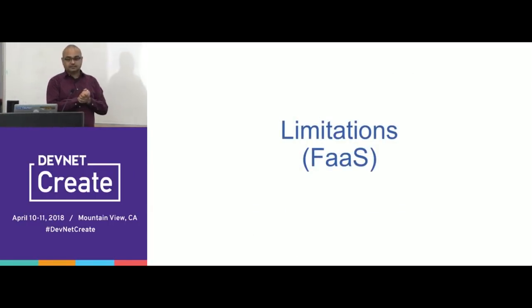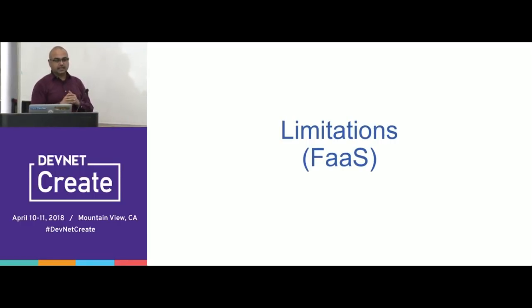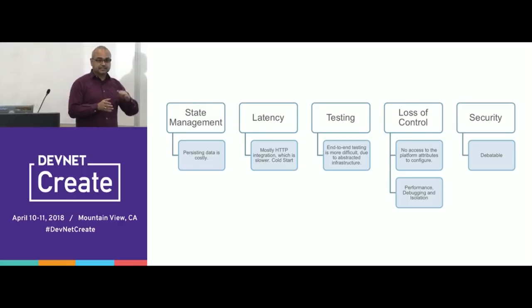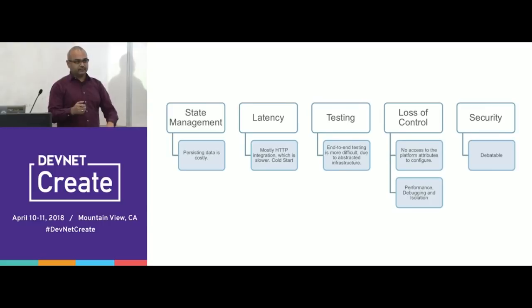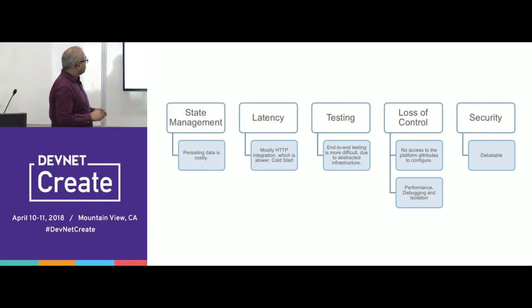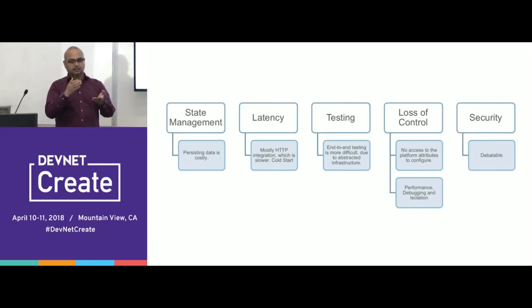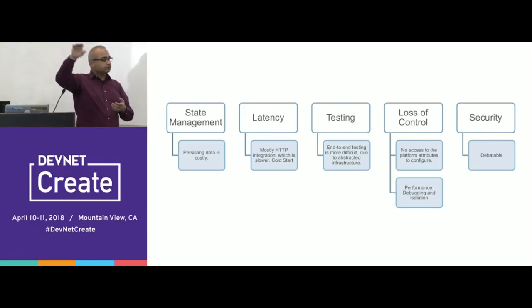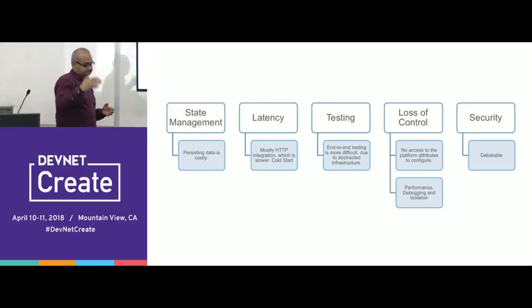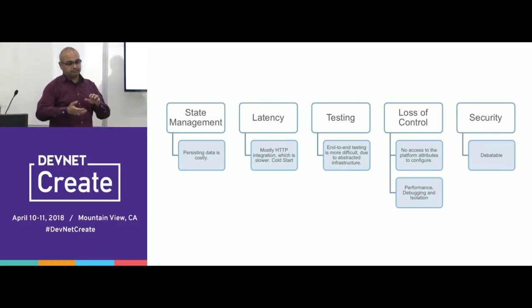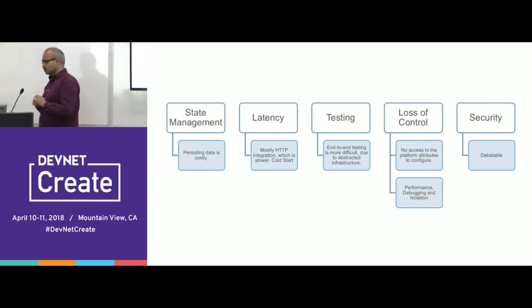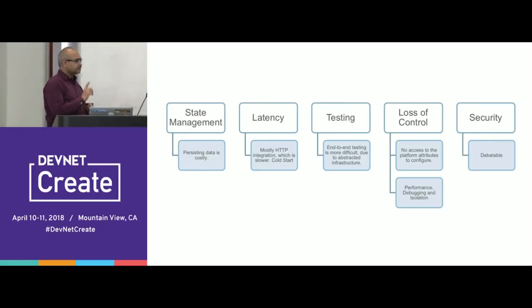Every technology has some limitations, and serverless is not an exception. From here onward we'll focus more on the FaaS aspect. Number one is state management: because it is ephemeral, we don't keep connections to the database. When it goes down, we kill all connections, so there is latency — when we get a trigger, we have to bring up the process and re-establish connections to databases and external ecosystem components. Testing is not easy because it's ephemeral and running at a cloud provider — you don't have much control, as it's third-party infrastructure.